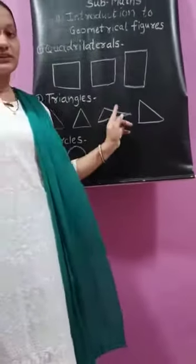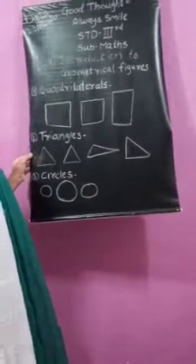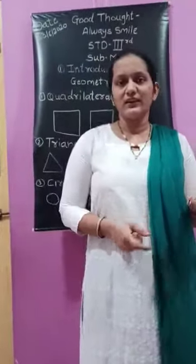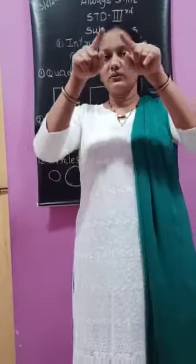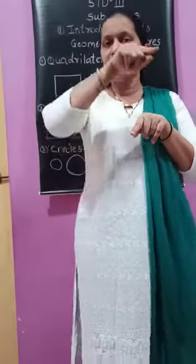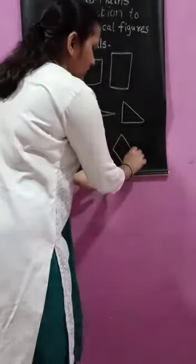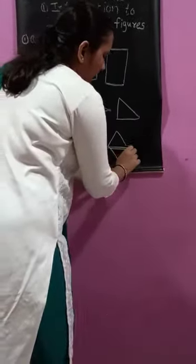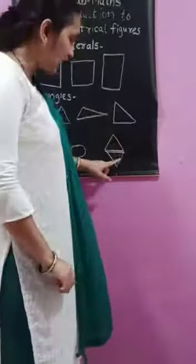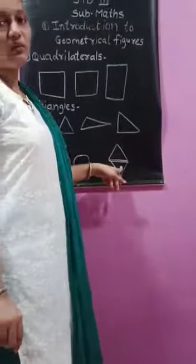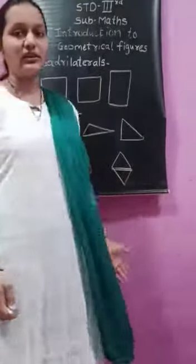The next geometrical figures are triangles. What is this? Triangle. So many things are in triangle shape. See, if you are eating pizza — you like to eat pizza. Pizza is in a circle shape, but we cut it like this and like this. This is one triangle and this is another one. So you get two triangle shapes.